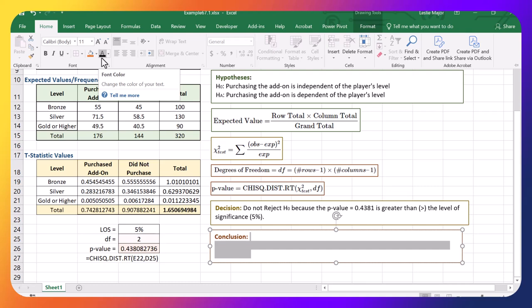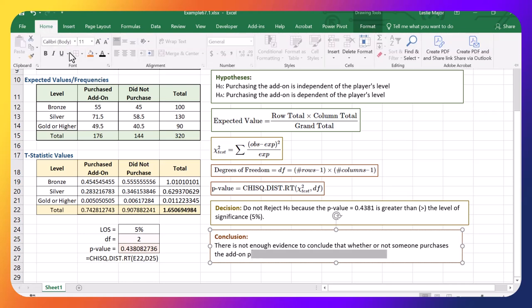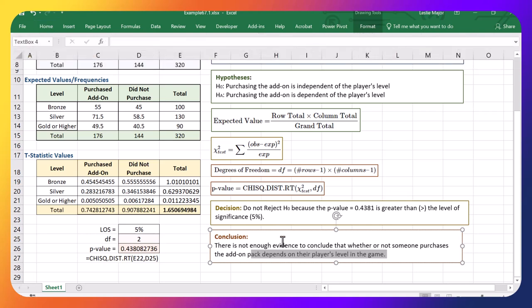So what is our conclusion? Well, since we did not reject H naught, we say that there is not enough evidence to conclude that the add-on pack depends on the player's level in the game. So the player's level should not affect whether or not they make a purchase. So the player's levels shouldn't really be used to decide who to target in this example. That concludes this example of the chi-squared test for independence, which is also called crosstabs. Thanks for watching!